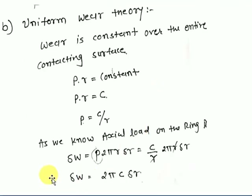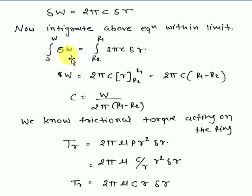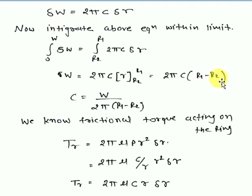Integrating δW = 2πC·δr with limits 0 to W and r2 to r1: W = 2πC(r1 - r2). Therefore, the constant C = W / (2π(r1 - r2)). This value of C will be used in the torque equation.